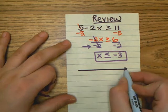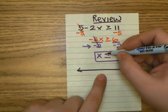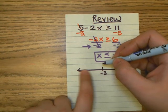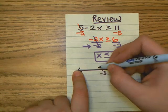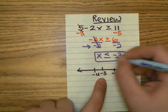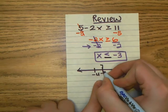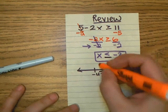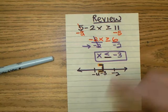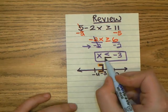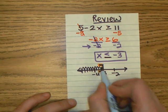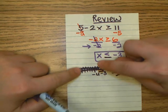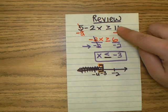We can also show our solutions graphically. This is saying x can be any number less than negative 3, which is on the left side of the number line. We use a bracket because it could equal negative 3 as well — just like a bracket has an equal sign in it. So we shade this side, meaning any number less than or equal to negative 3 can go in for x and make this side greater.